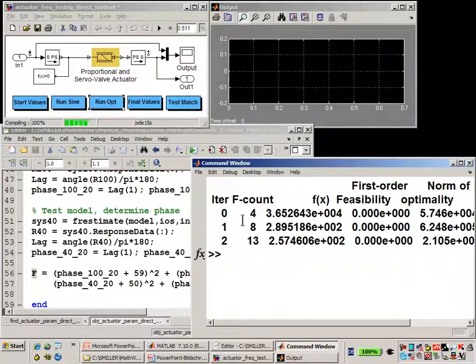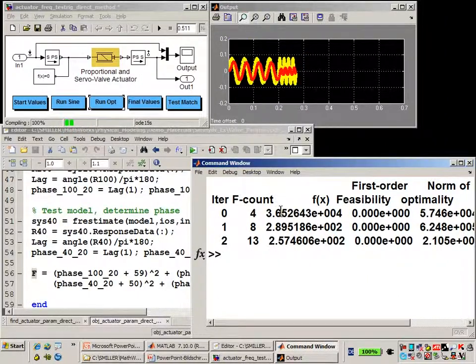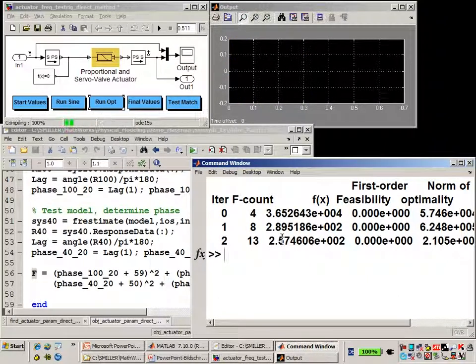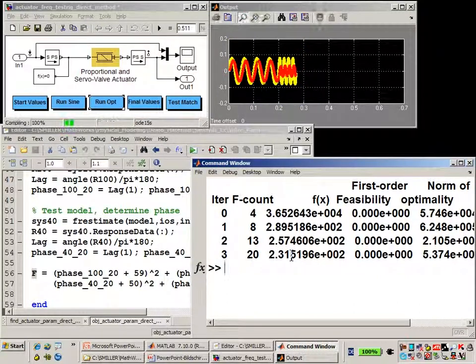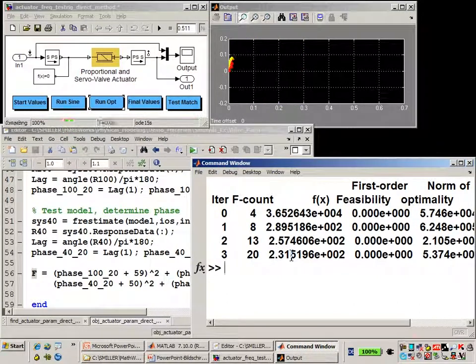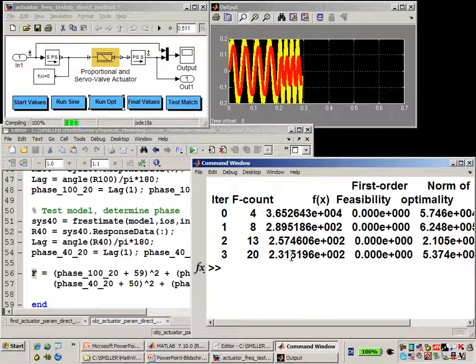You can see that even after this short period of time, the objective function has been shrunk significantly. It started at around 36,000 and now it's down to about 200. And it will continue to shrink until it meets the tolerances that we have specified in the optimization.